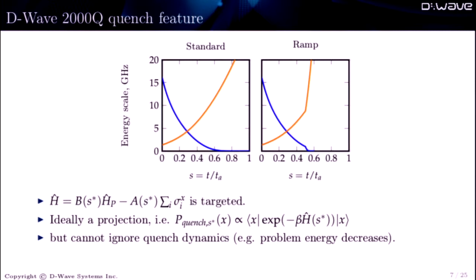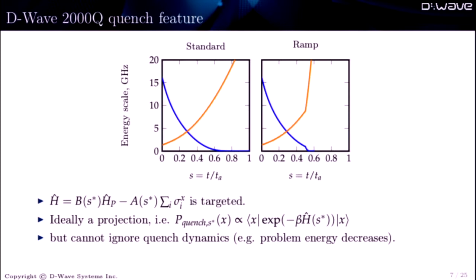So the quench feature is basically that we take the annealing schedule. And if we're interested in a particular point, I think so here would be 0.5. We anneal in a regular way to that point. We hope there's some equilibration, maybe globally, maybe locally. And then we ramp out. So we prevent the dynamics late in the anneal from happening by going faster than those dynamics. And hopefully we get properties of this ramped distribution. Ideally it acts like a projection, so we're going to get a classical state out so we can know the classical statistics of the quantum Boltzmann distribution. But actually lots happens during the quench and in particular things like problem energy decrease.